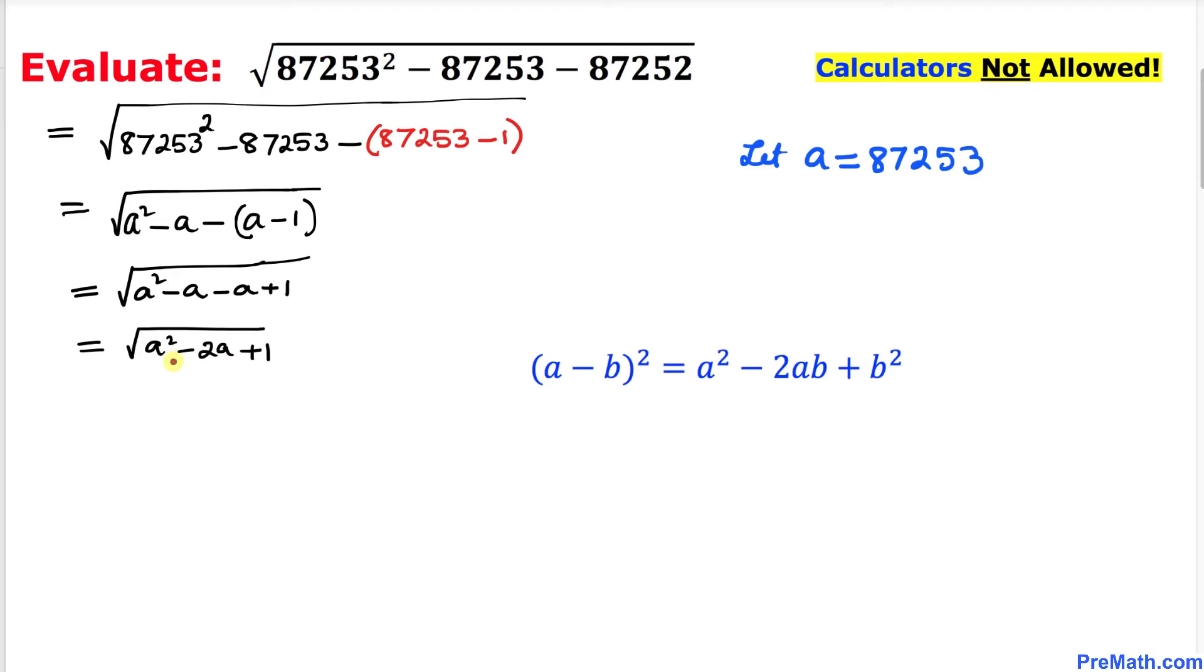Now let's focus on this radicand: a squared minus 2a plus 1. One could be written as 1 squared, so let's compare this one with this formula. We can see that this represents a perfect square, so this could be written as a minus 1 whole squared. Therefore, we can write this one as the square root of a minus 1 whole squared.